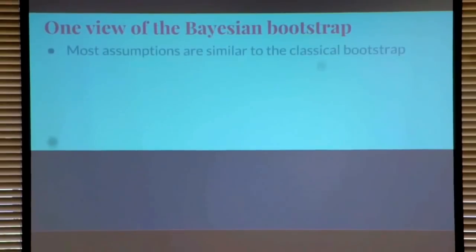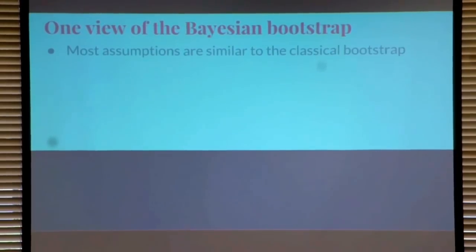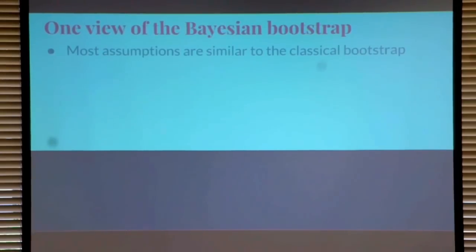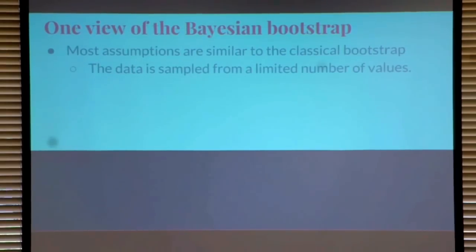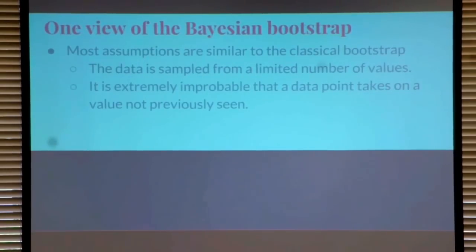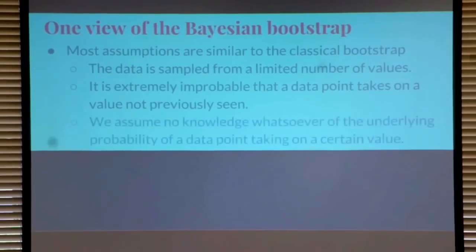So what is the Bayesian bootstrap? The assumptions are very similar to the classical bootstrap. The main difference is that the classical bootstrap is a classical statistical procedure — it's about simulating what would happen if you redid the data collection many times. While the Bayesian bootstrap is a Bayesian procedure — it's about modeling what's known and what's uncertain given some data and some assumptions. Those assumptions are that the data is sampled from a discrete, limited number of values, and that it is extremely improbable that a data point takes on a value not previously seen.